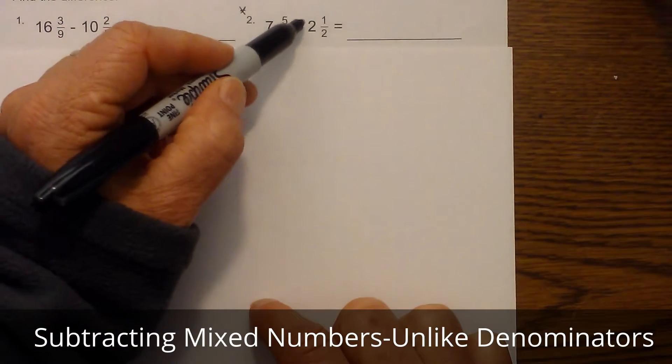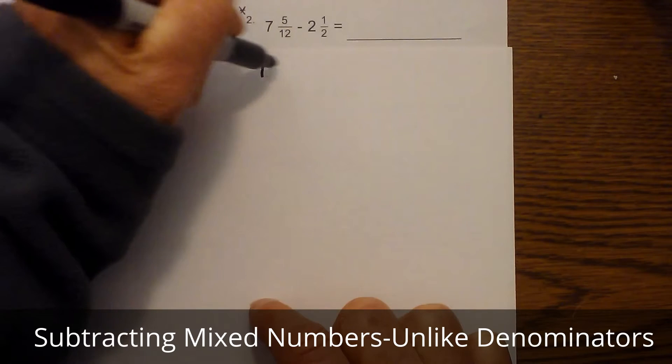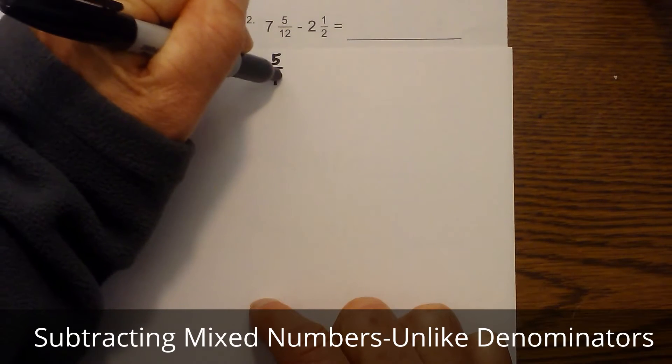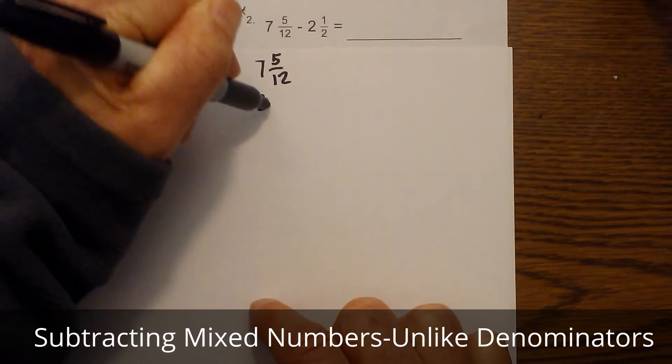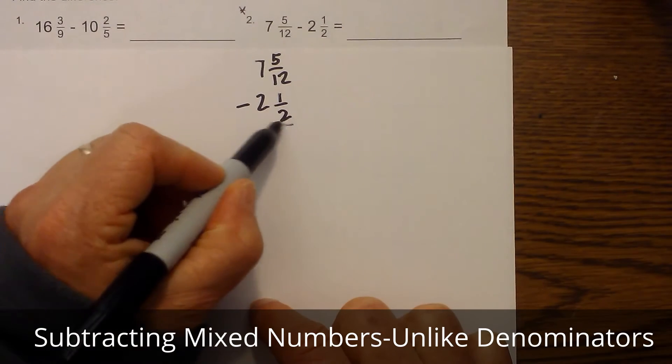We have seven and five twelfths minus two and one half. First thing I like to do is rewrite it into a vertical fashion because I can see it. You do not need to do this, I just think it's a little more visually appealing.